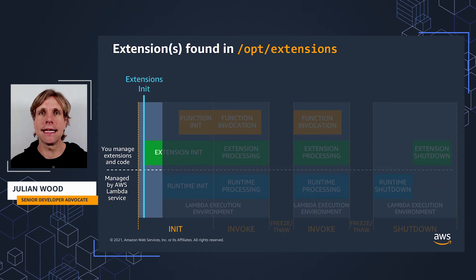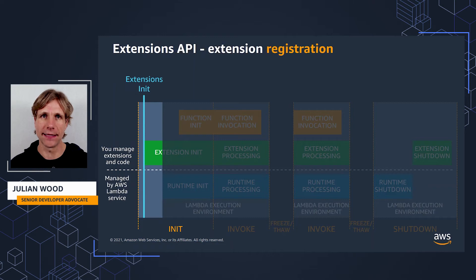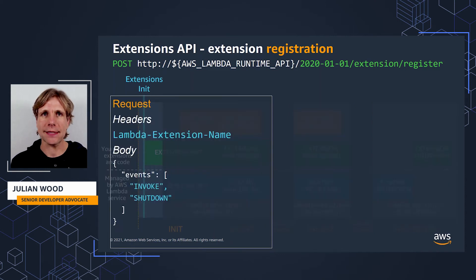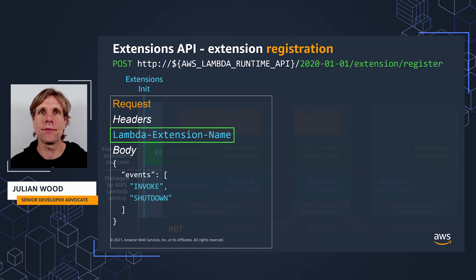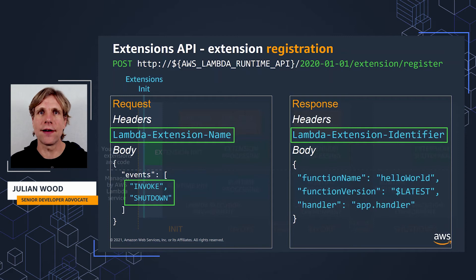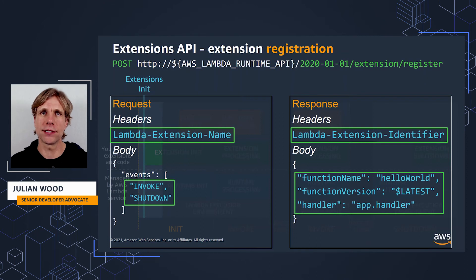Each extension then needs to register with Lambda to receive lifecycle events. It does this by calling the Extensions API /register with a POST request. Each register API call must include the Lambda-Extension-Name header with the full file name of the extension. The extension then specifies which events to register for — external extensions can register for invoke and/or shutdown. The Extensions API responds with a unique identifier, which the extension uses for subsequent API calls, and also returns information about the function. You can register up to 10 extensions for a function, and this limit is enforced through the register API call.